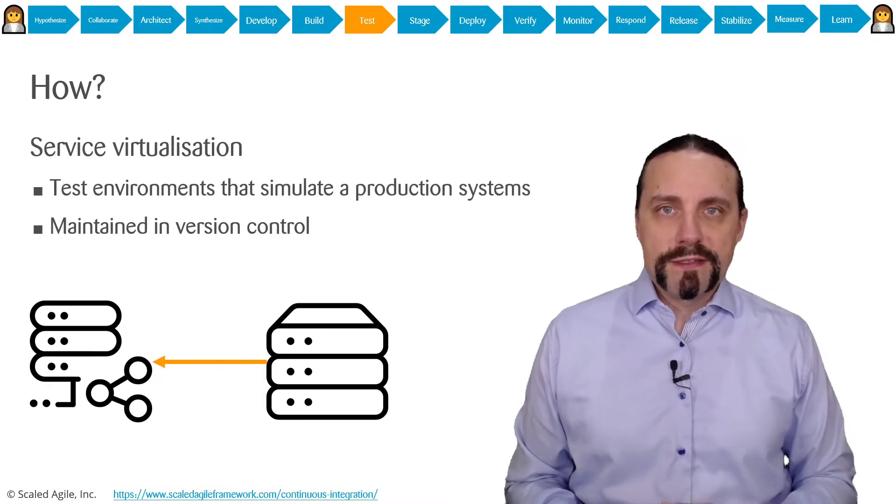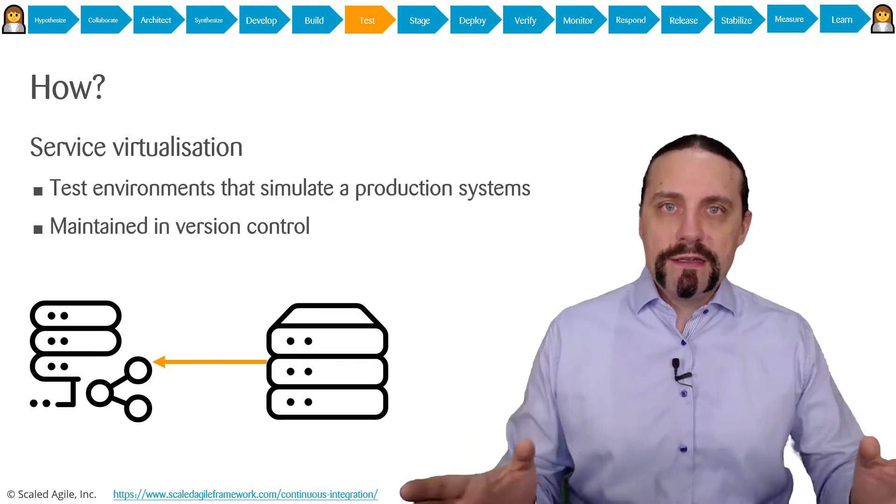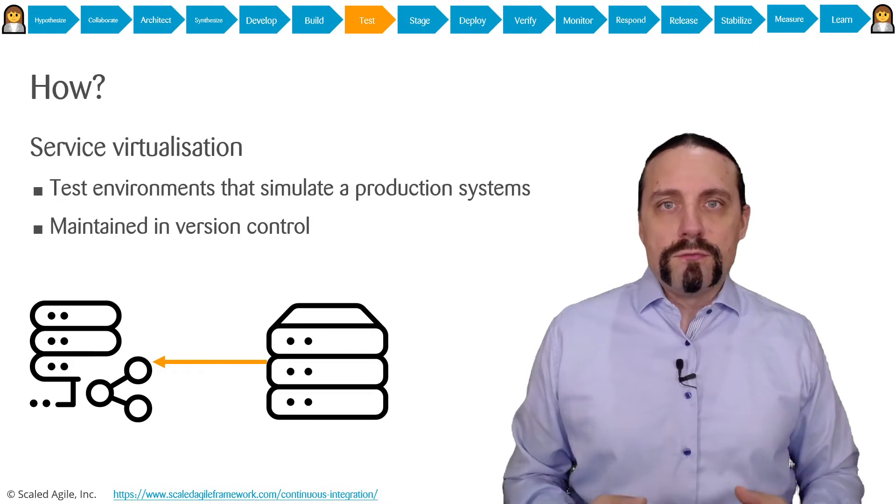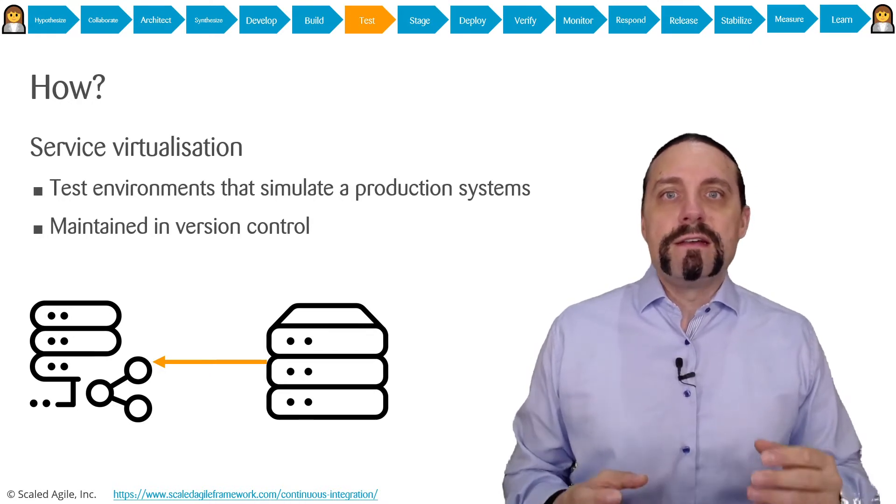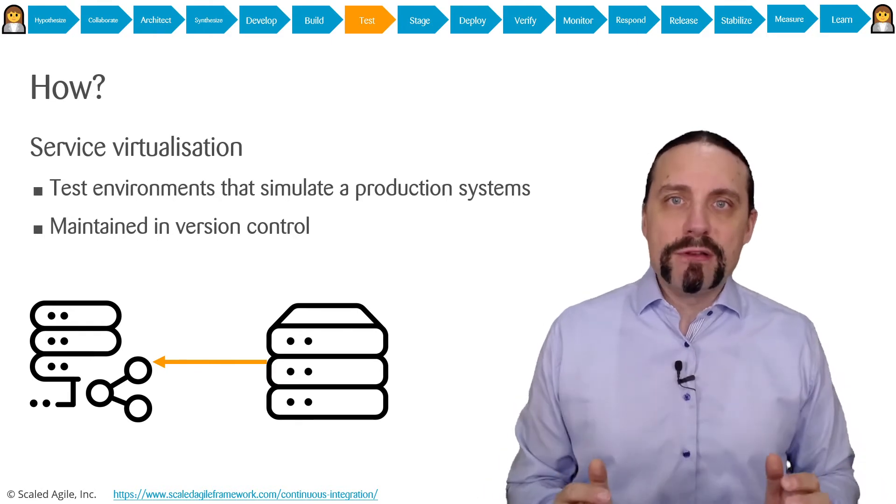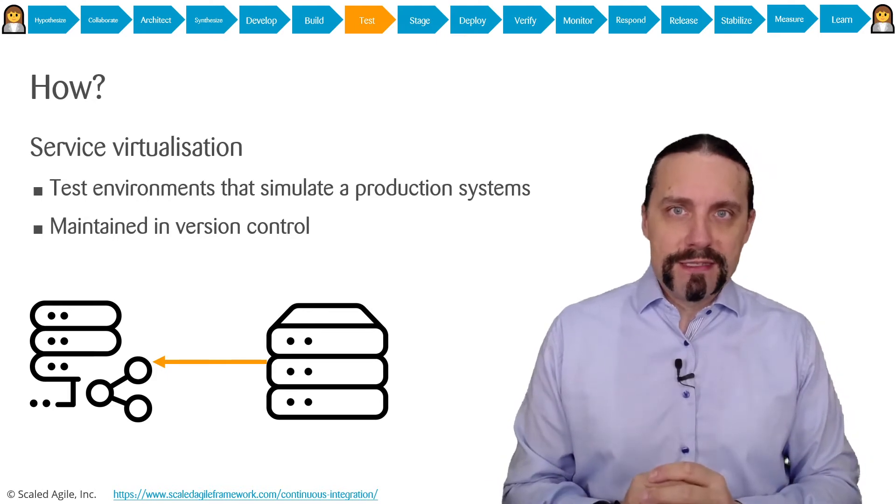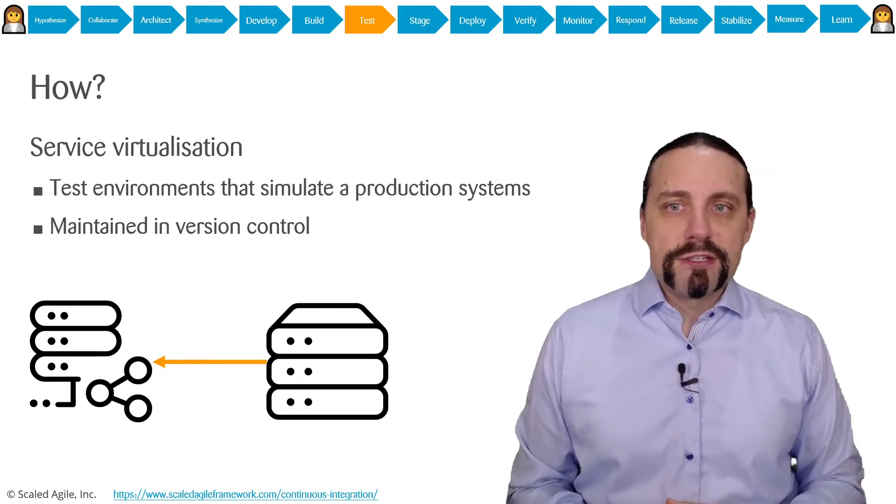Usually you have a system that depends on other systems. You have interfaces to these other systems. In order to move fast you need to be decoupled from the system and you need to be able to test decoupled from these systems. To do that we use service virtualization.